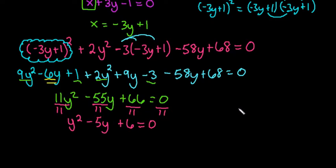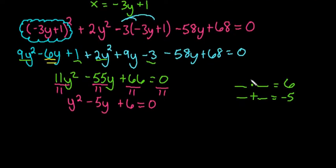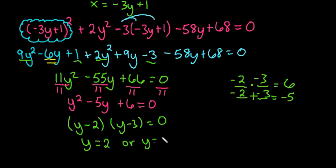When factoring, we're looking for two numbers that multiply to give 6 and add up to negative 5. Since we need a positive 6, both numbers must be negative, so we use negative 2 and negative 3. This factors into y minus 2 times y minus 3 equals 0, giving us y equals 2 or y equals 3.